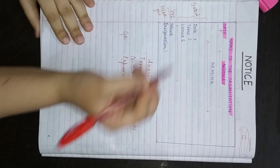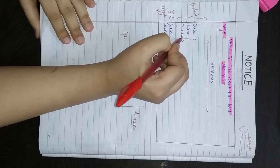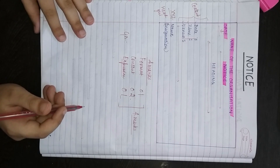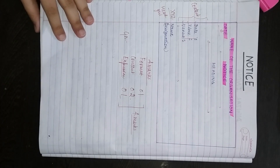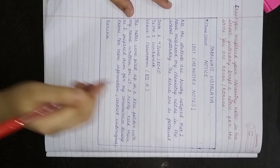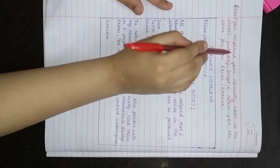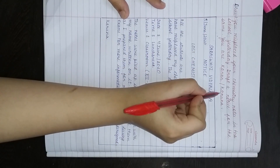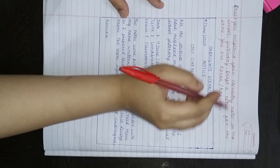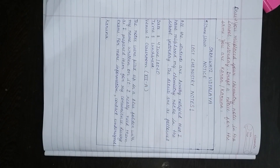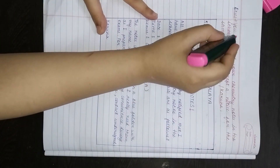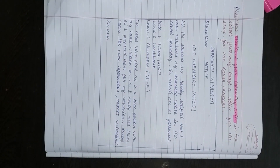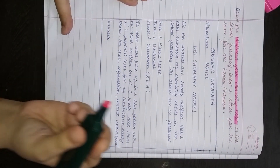You can also use date, time, and venue in the content or body of the notice. Let us now discuss a question. The question is: you misplaced your chemistry notes in school yesterday — draft a notice for the same. Your name is Karan or Karuna. You misplaced your chemistry notes in school, meaning you lost them, so you need to draft a notice regarding that.